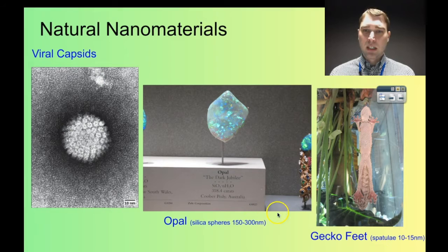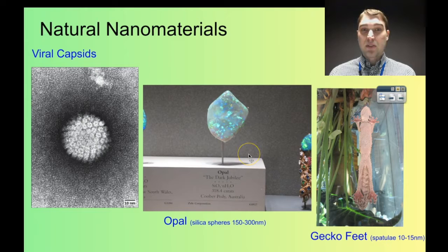Here's a picture of an opal that I took when I was at the Smithsonian Natural History Museum in Washington DC. It's an opal from South Australia where I am. The cause of the interesting light effects when light hits an opal is down to the existence of little spheres of silica present in the opal. The size of those silica spheres is between 150 to 300 nanometers, so we're still in that kind of scale area.